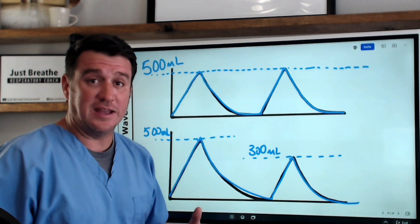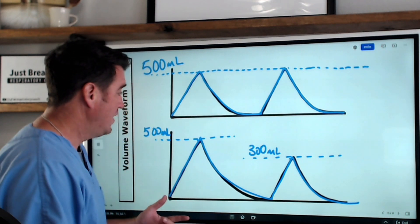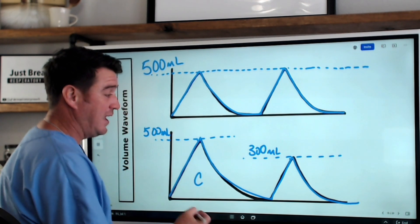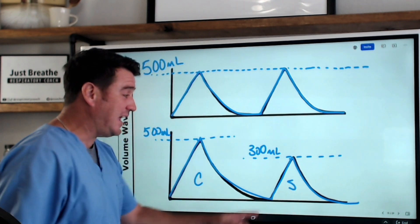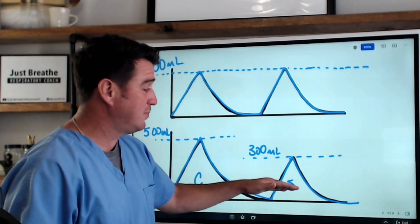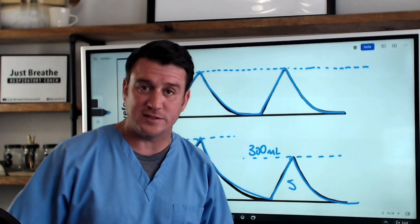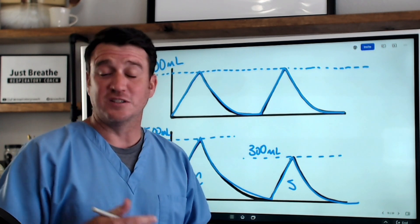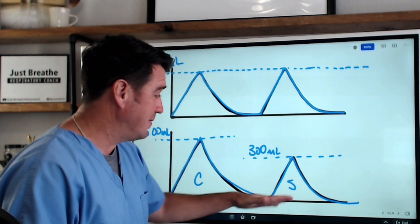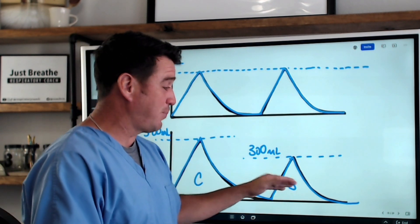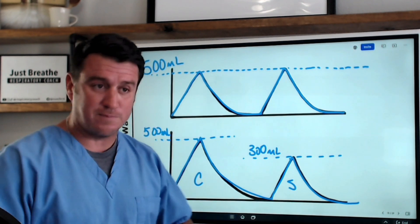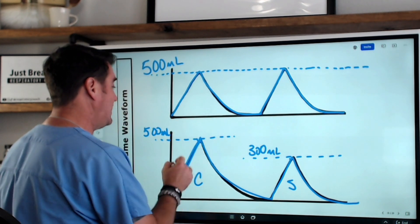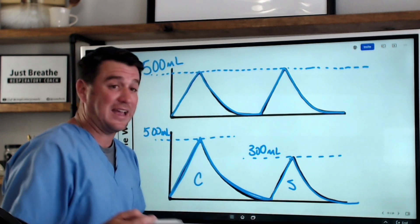We might also though be in SIMV and so if we were in SIMV we would have a controlled breath here and then this may be a spontaneous breath which we know is typically smaller than controlled breaths. Not always, but a lot of times you see controlled breaths typically larger than spontaneous efforts. Now maybe there's some pressure support on here. Maybe we need to add some pressure support onto this spontaneous effort. Nonetheless, when looking at the volume waveform, all you are seeing is how much volume is going in and how much is coming back out.